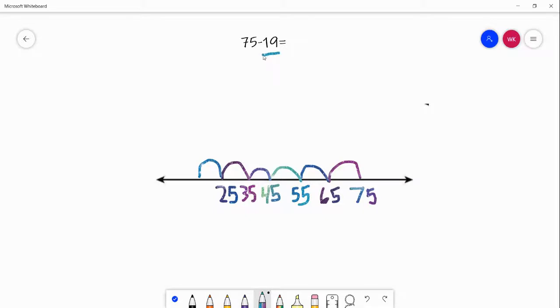But you know that you can't go to 15 because your number is 19. So now I'm going to start counting back by 1. So I'm at 25, 24, 23, 22, 21, 20, 19.